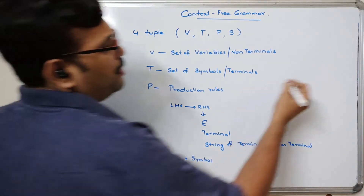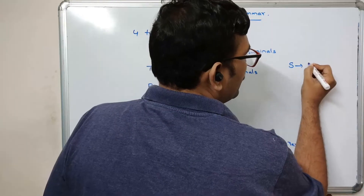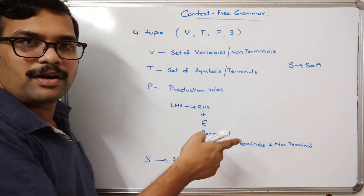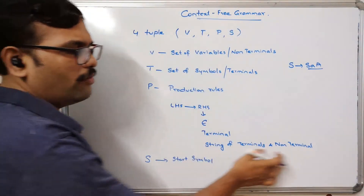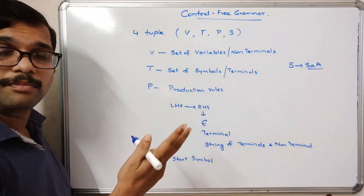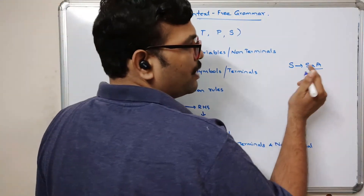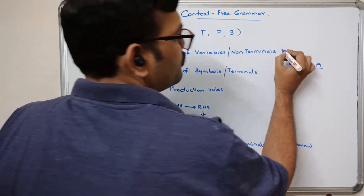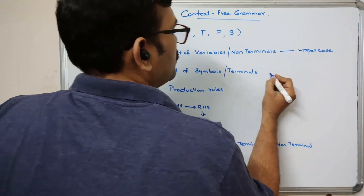For example, the production S tends to S A A is a valid context free grammar production, because the right hand side can be a string of terminals and non-terminals. Here we have one terminal and two non-terminals, so this is valid. This is not a regular grammar because a regular grammar should have only one terminal and one non-terminal on the right hand side.